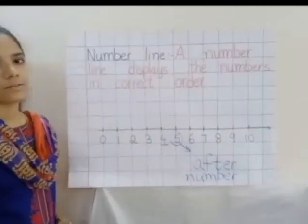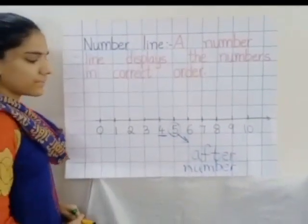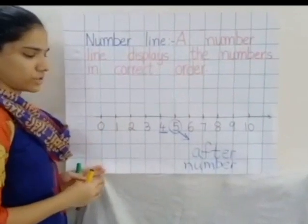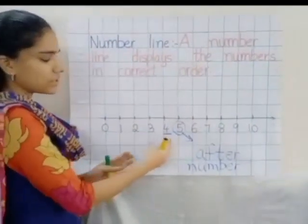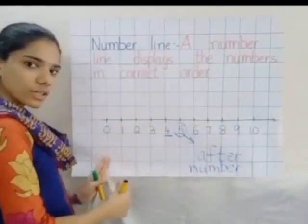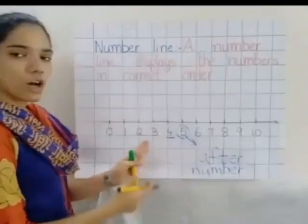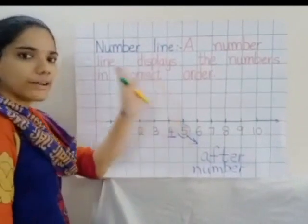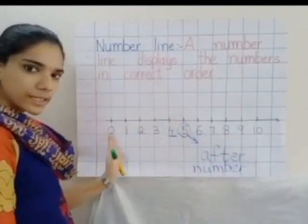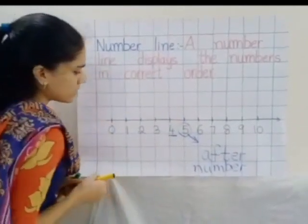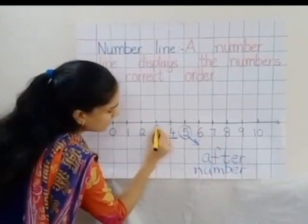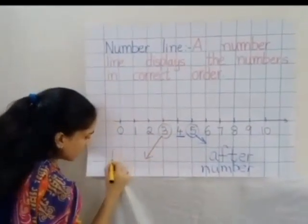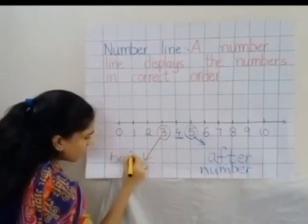Yes children. Now look here children. Which number comes before 4? Here we have 4, right. Which number comes before 4? Yes, 3. Always to your left side it will be the before number. Left side will be the before number. So 3 is the before number.